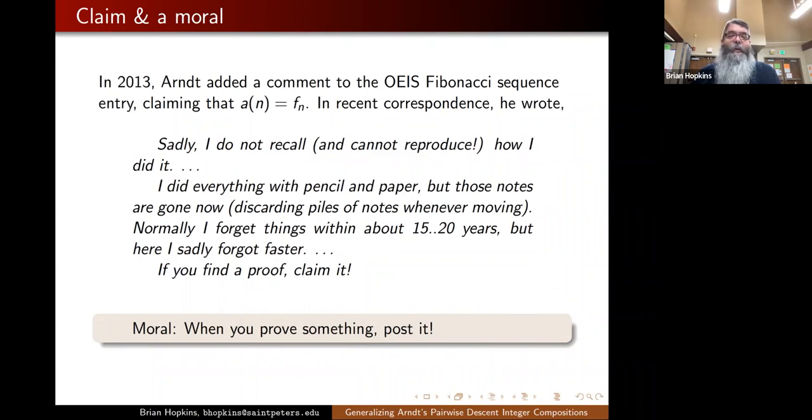So he added in the comment to the Online Encyclopedia of Integer Sequences entry for the Fibonacci numbers that these compositions are counted by the Fibonacci numbers. So I wrote to ask how he had proven that. He responded that he didn't recall how he had shown it and he couldn't come up with it right then. So he had lost those notes and forgotten. The moral of the story is when you prove something, post it somewhere, both for everyone else to appreciate and also for your future self to remember how it worked.